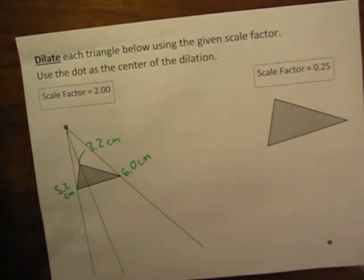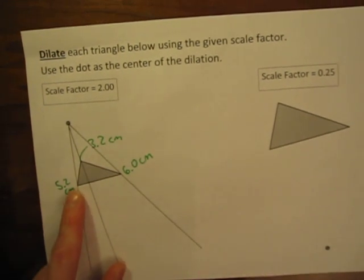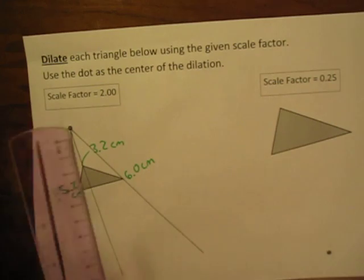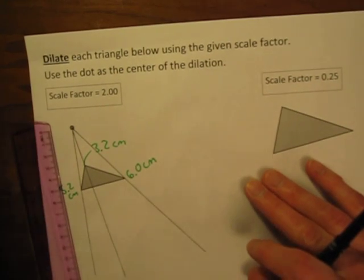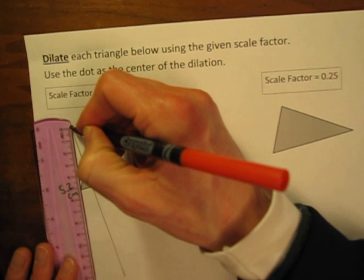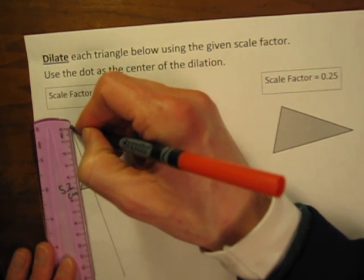So now what I want to do is, I want to take those distances, and I'm going to multiply them by the scale factor. So if the first distance here, if this point was originally 5.2 cm away, now I'm going to multiply that 5.2 times 2, and I'll get 10.4. So the new location of that point will be 10.4 cm away from the center of the dilation.